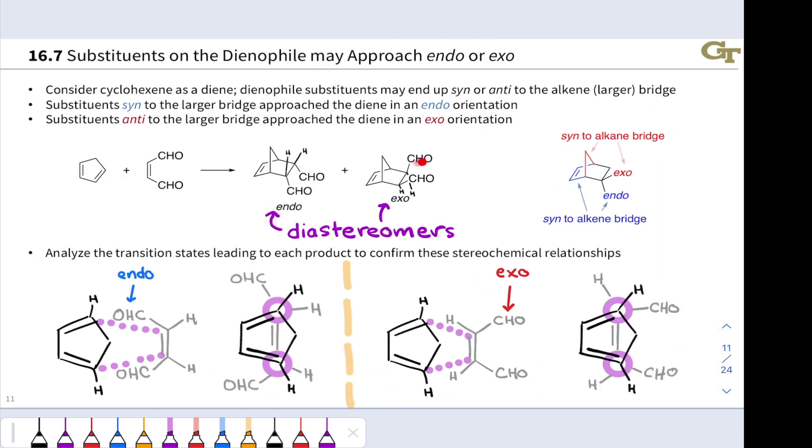Notice now CHO, CHO are anti to the carbon-carbon double bond, and so we can infer these stereochemical relationships from analysis of the transition states.